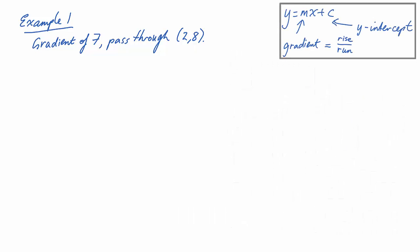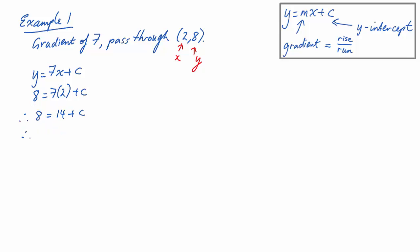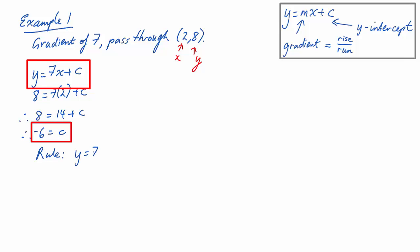We know the general form of the line is going to be y equals 7x plus some number c, and we know that it passes through (2, 8). In other words, when x equals 2, y has to equal 8. So let's substitute that point into our equation: 8 equals 7 times 2 plus c, which means 8 equals 14 plus c, and taking away 14 from both sides, negative 6 equals c, which means the rule is y equals 7x minus 6.